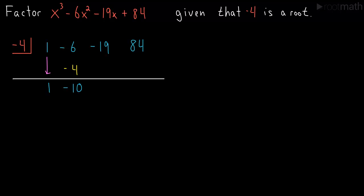We repeat the process, so minus 4 times minus 10, put the result right here, and we get positive 40. Add down the column, minus 19 plus 40 is positive 21, sorry about that.